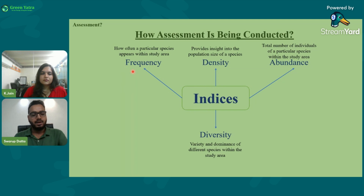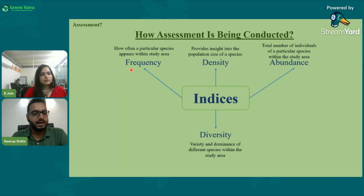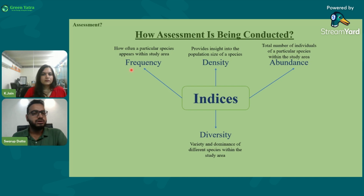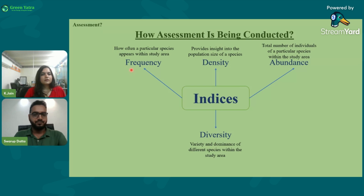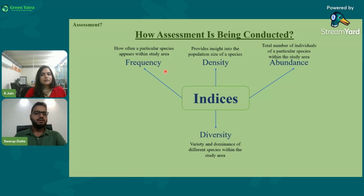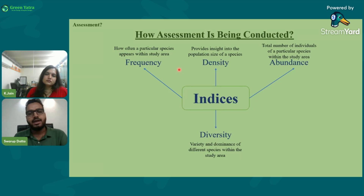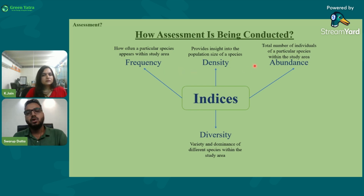Frequency means, for example, if we are assessing the biodiversity of a lake and a water bird is coming frequently to that lake, we know there is a food source or the bird is roosting on the periphery. Density is the population size of a particular species — like 100 birds or only 10 birds coming to the area. Diversity is the number of different types of species present in the area. Abundance refers to whether a particular species is dominating the area or not.